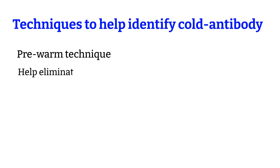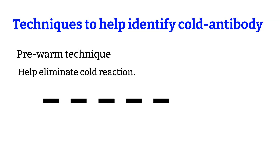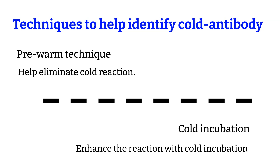The pre-warm technique is your best friend when dealing with cold antibodies — I have a video about it as well. But if you don't want to eliminate the reactions and want to prove your cold antibody theory instead, you can enhance the reactions by incubating your tubes in the refrigerator at 4 degrees Celsius for 15 minutes, spinning them down, and reading the reaction again — it should be stronger. However, if the initial reaction was already 4-plus before cold incubation, then cold incubation won't help.